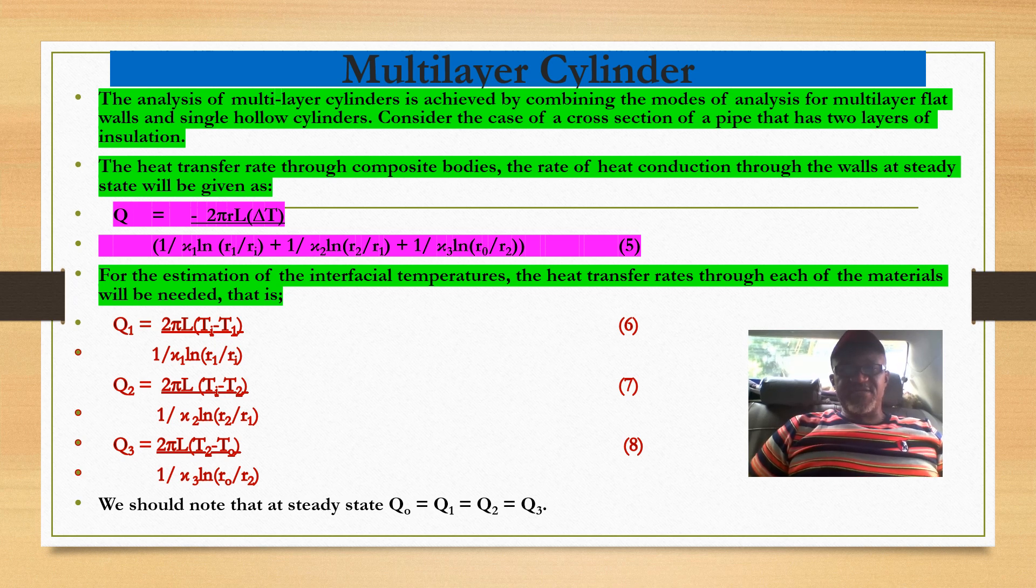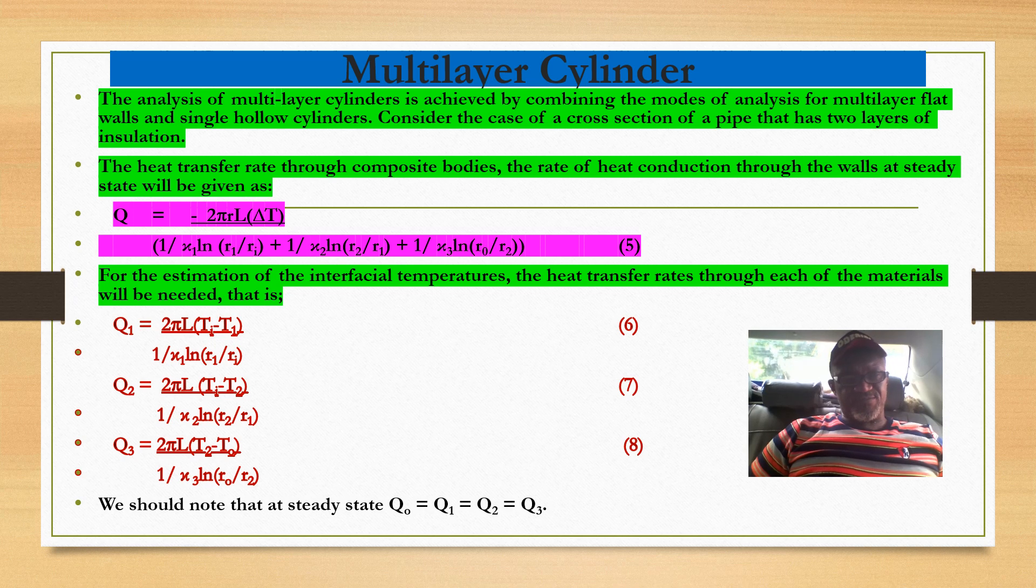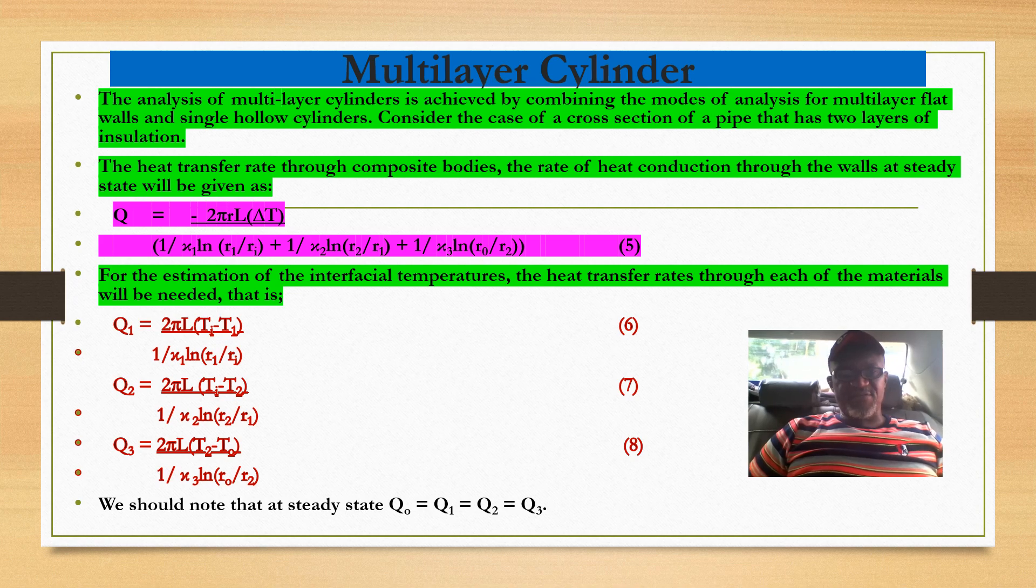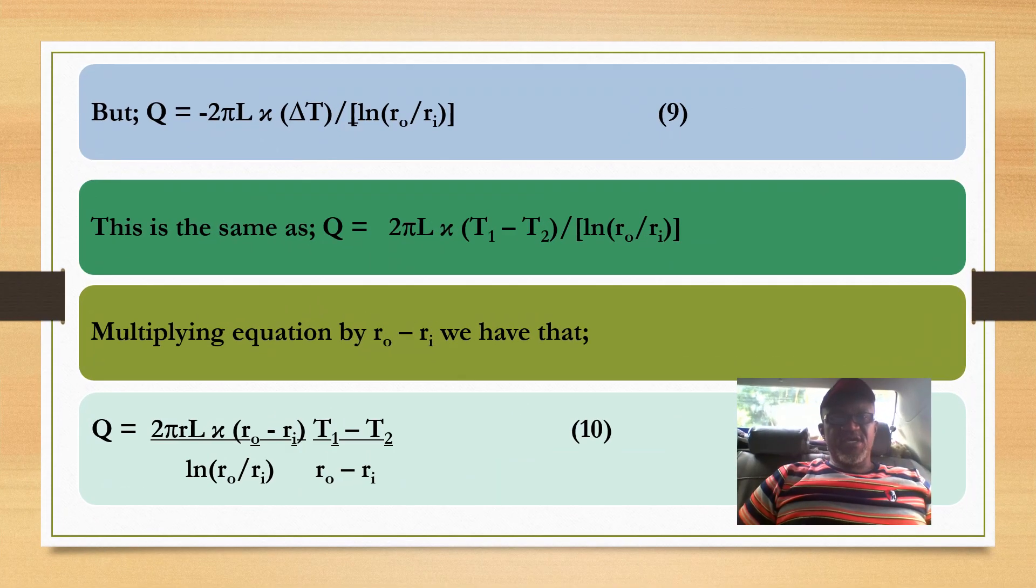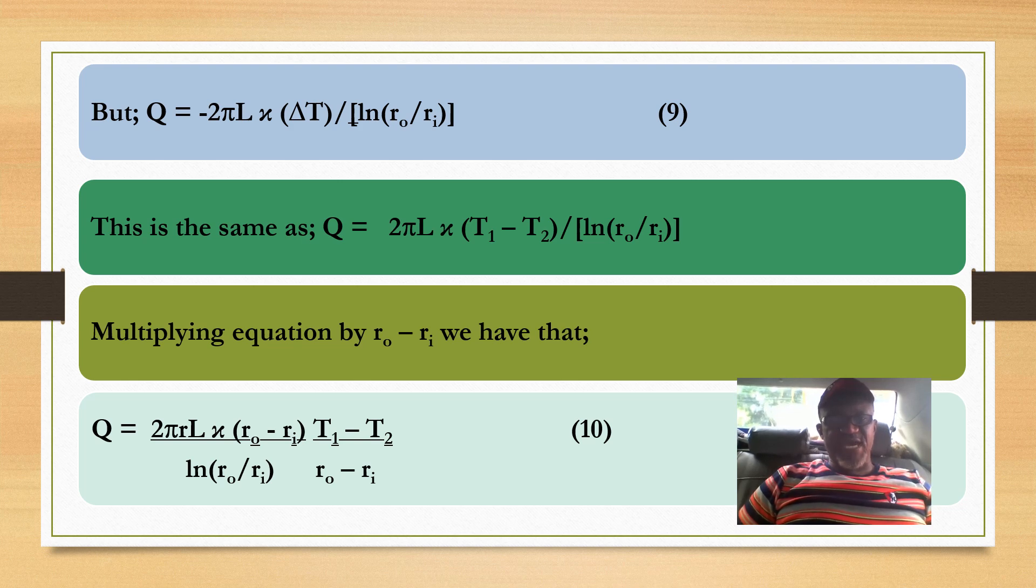For multi-layer cylinder, just like we had for the slab, we have Q = 2πLΔT divided by the sum of resistances [ln(r_1/r_i)/k_1 + ln(r_2/r_1)/k_2 + ln(r_3/r_2)/k_3]. I will differentiate them into Q_1, Q_2, Q_3. We have the same equation except we'll be changing from k_1 to k_2 to k_3, also changing from internal to outer temperatures. If Q_1 = Q_2 = Q_3, then we have equation 9, and if we multiply by (r_o - r_i), we have equation 10.